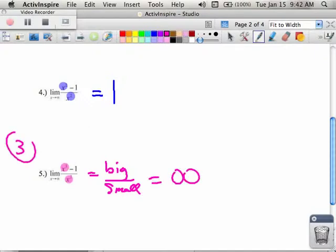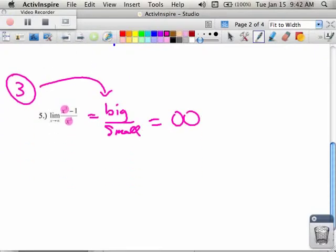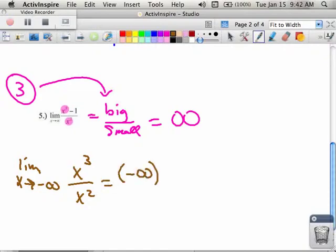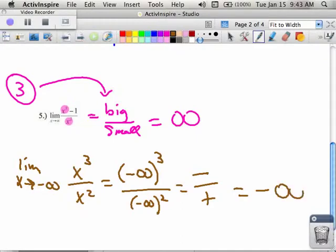So rule number three is that if you have some big power on the top and some smaller power on the bottom, you're going to go to some kind of infinity. Now this could be a positive or negative infinity, so you need to be careful. Check the signs. For example, if in this particular example, I was going to negative infinity, let's say that I said I want the limit as x was approaching negative infinity of x cubed over x squared. What ends up happening, just for the sake of argument, even though infinity is not a number, I would have negative infinity cubed over negative infinity squared. The number on the top is negative, the number on the bottom is positive. But we know that since we're going big divided by small, it's a negative divided by a positive, excuse me, this would yield a negative infinity.